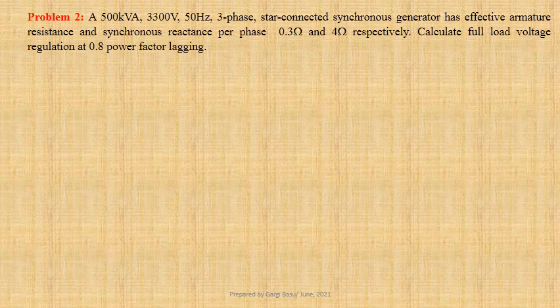A 500 kilovolt ampere, 3300 volts, 50 hertz, three-phase star connected synchronous generator has effective armature resistance and synchronous reactance per phase of 0.3 ohm and 4 ohm respectively. We have to calculate full load voltage regulation at 0.8 lagging power factor.